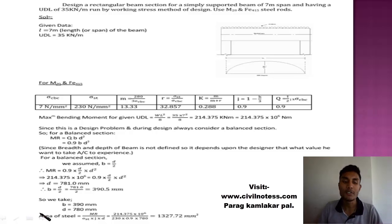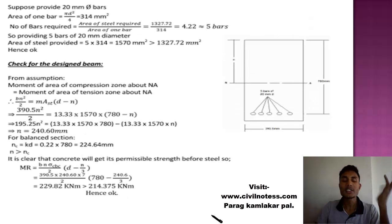Now we have to determine the area of steel which is given as MR upon sigma ST j into d. MR we know, sigma ST we calculated as 230, j is 0.9, and d we calculated right now. This is the area of steel we have to provide in this 390 by 780 size rectangular beam: 1327 mm square of AST in the particular beam.